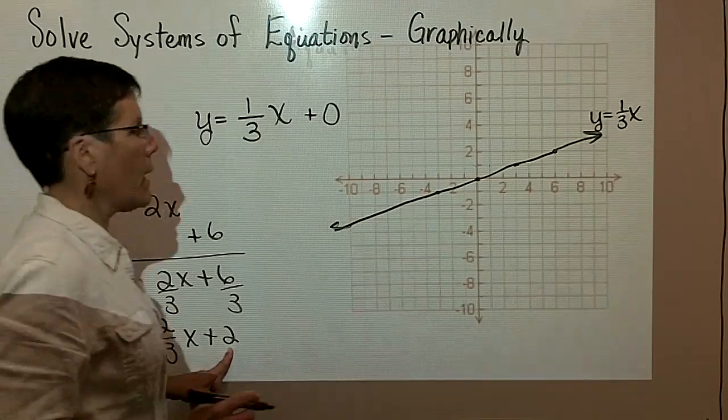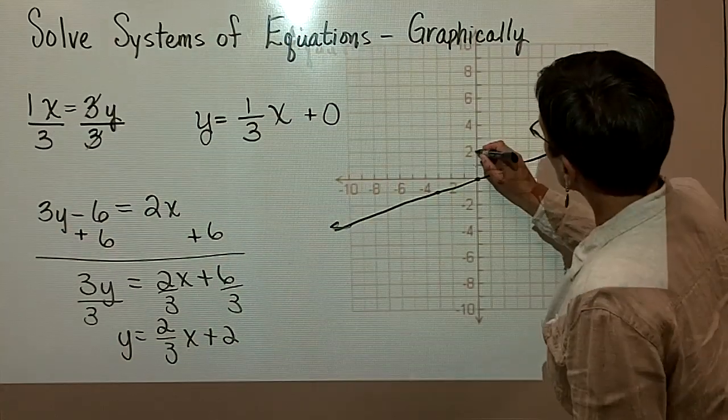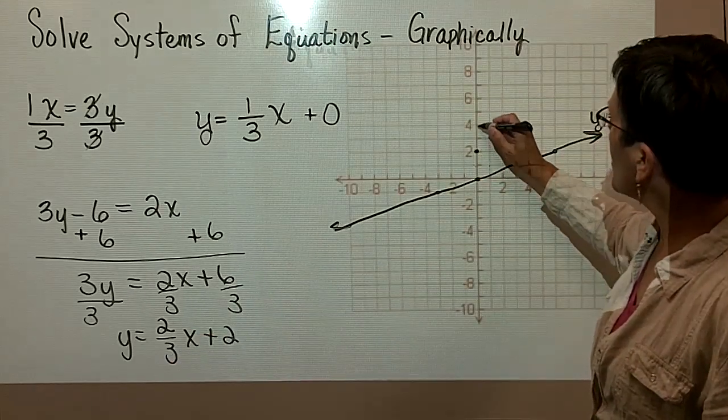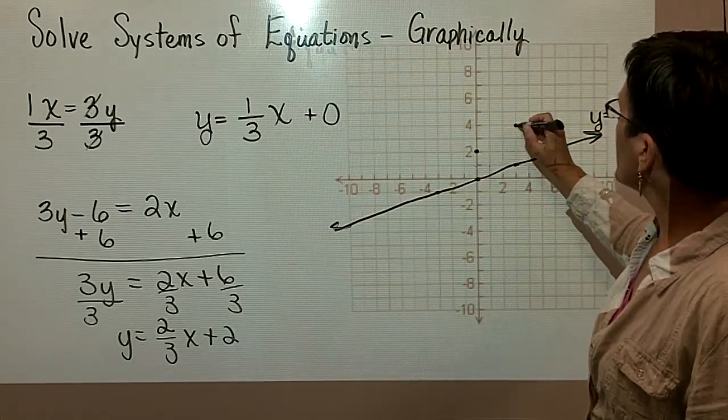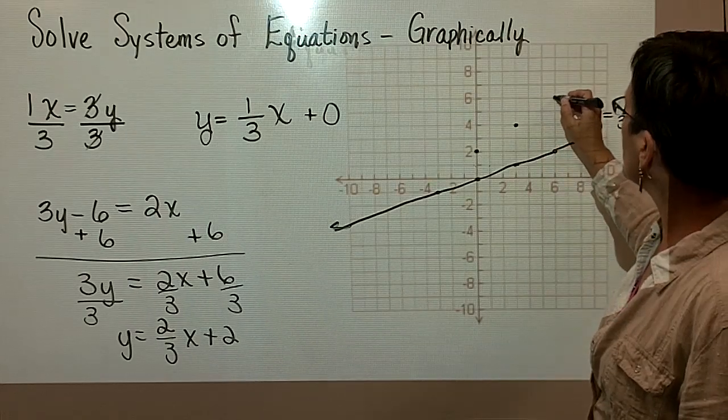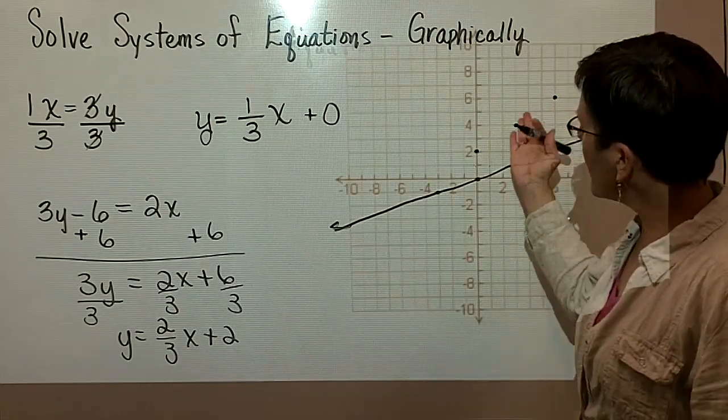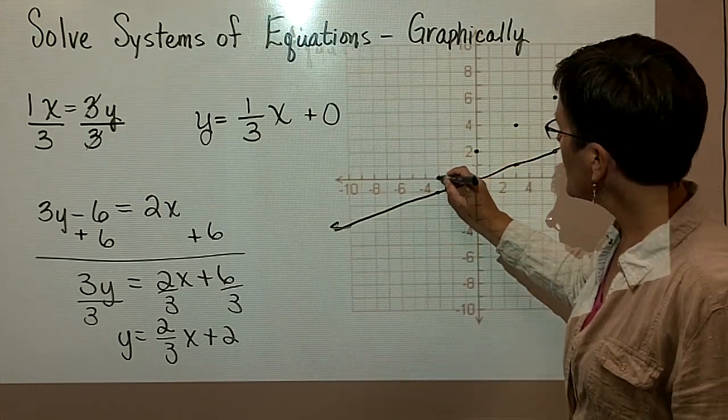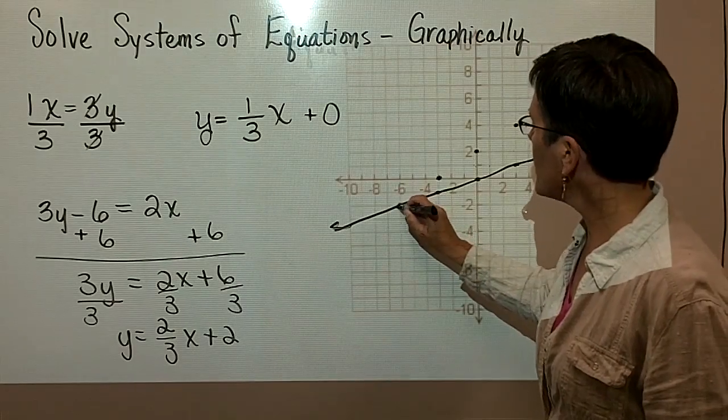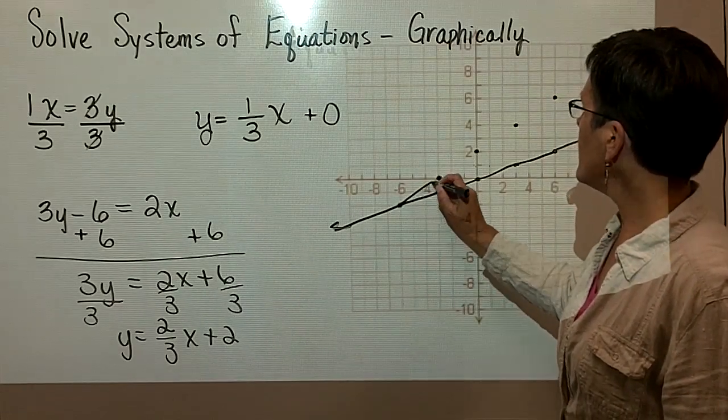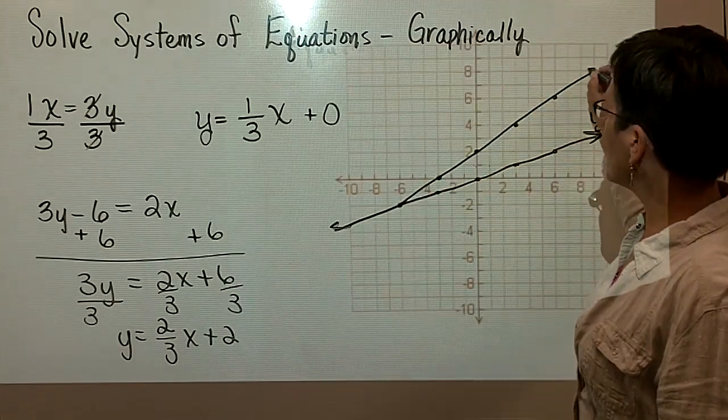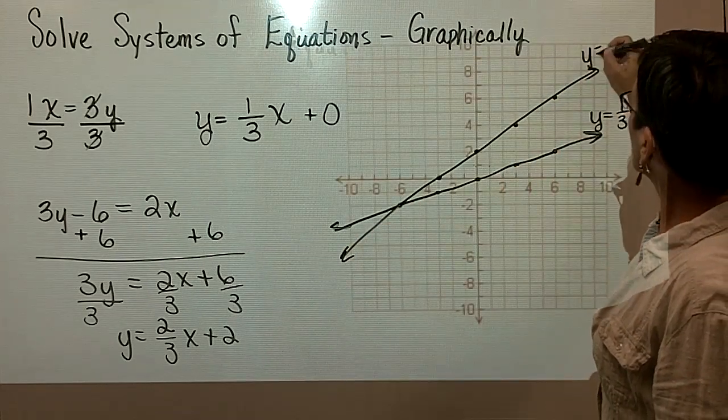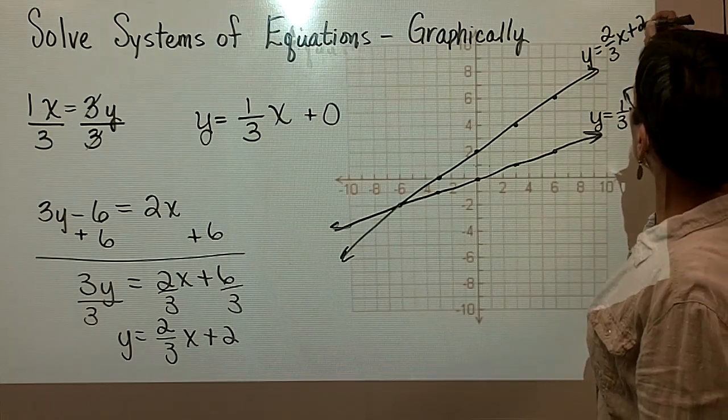So my y-intercept is a positive 2, right here. And my slope is a positive 2 over a positive 3, so I'm going to go up 2 and to the right 3. I might go again, up 2 and to the right 3. It looks like these lines are going to intersect down over here somewhere, so I'm going to go down 2 and to the left 3, and I'm going to go down 2 and to the left 3, so that I can see where the graphs of these two lines intersect. Again, this was the equation y equals 2 thirds x plus 2.